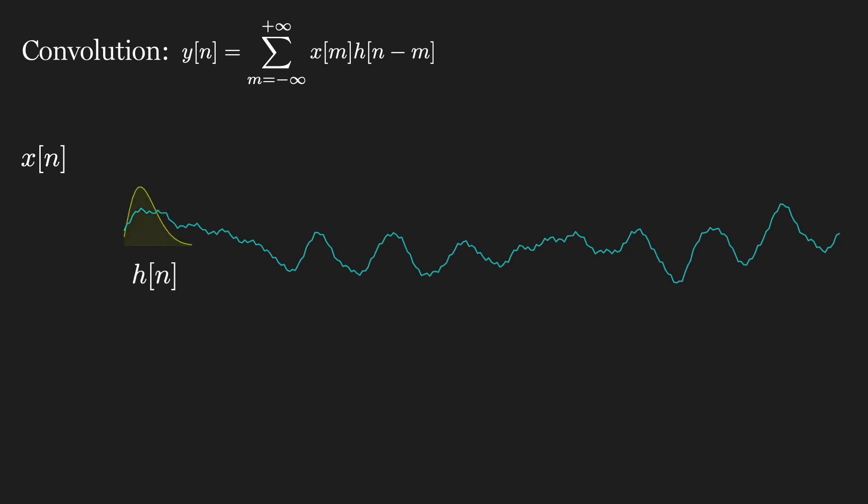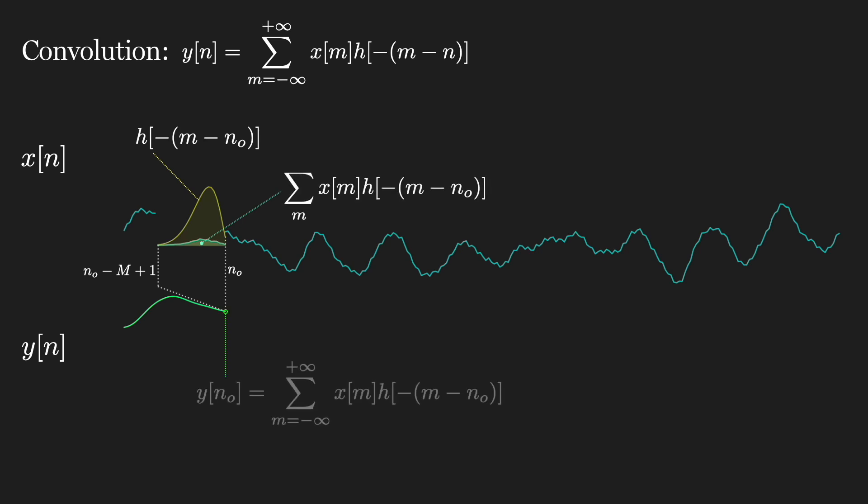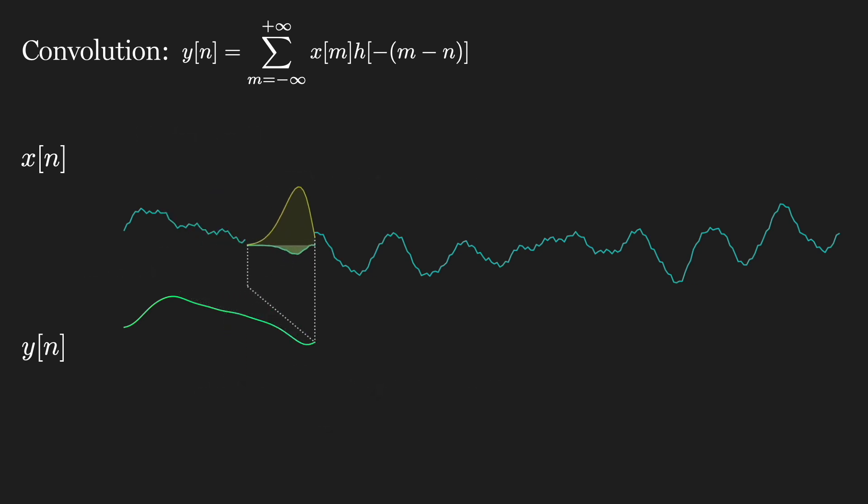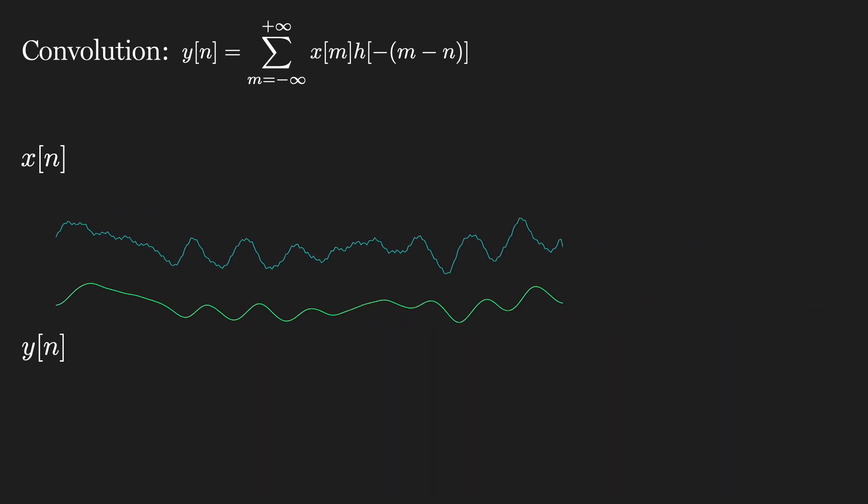An alternative view of convolution that we've depicted previously is to rewrite the convolution sum slightly. Instead of h of n minus m, let's write it as h of minus the quantity m minus n. That's equivalent to reversing the impulse response in time. As we slide the reversed impulse response, we multiply h of n by the signal in the overlapped regions. Summing these values provides the output y of n0. Again, as we slide across the duration of the signal, the output is smoothed. Note, this is absolutely equivalent to the prior method. It is just two slightly different ways of looking at convolution.